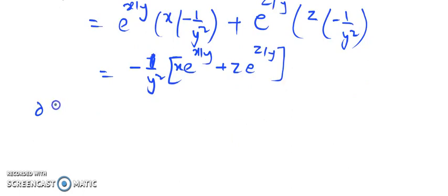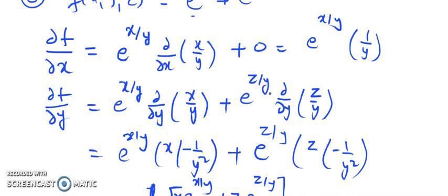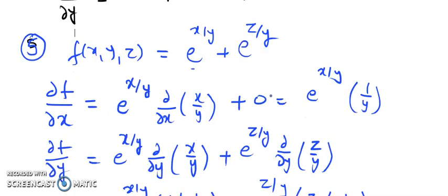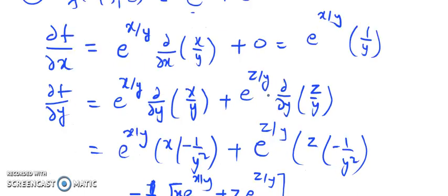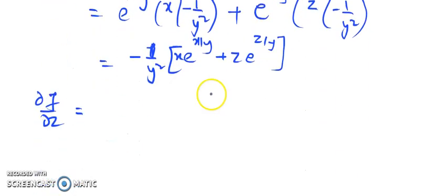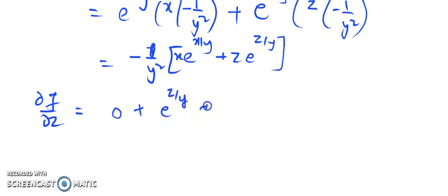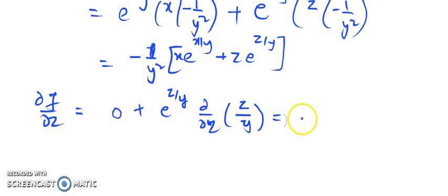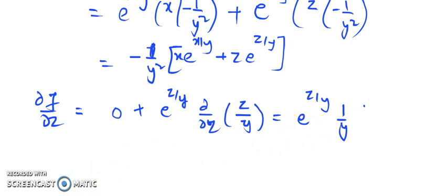The last one is partial differentiation with respect to z. z is present only in the last term, so the first term is constant and gives 0. Then partial differentiation of e^(z/y) with respect to z: this is e^(z/y), then differentiation of z/y with respect to z gives 1/y since y is constant. So the answer is e^(z/y) · (1/y). I hope you have understood the examples. Thank you.